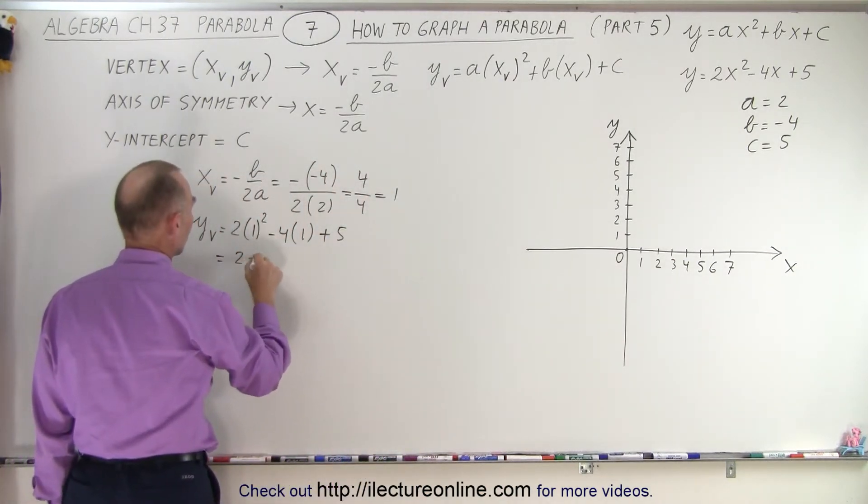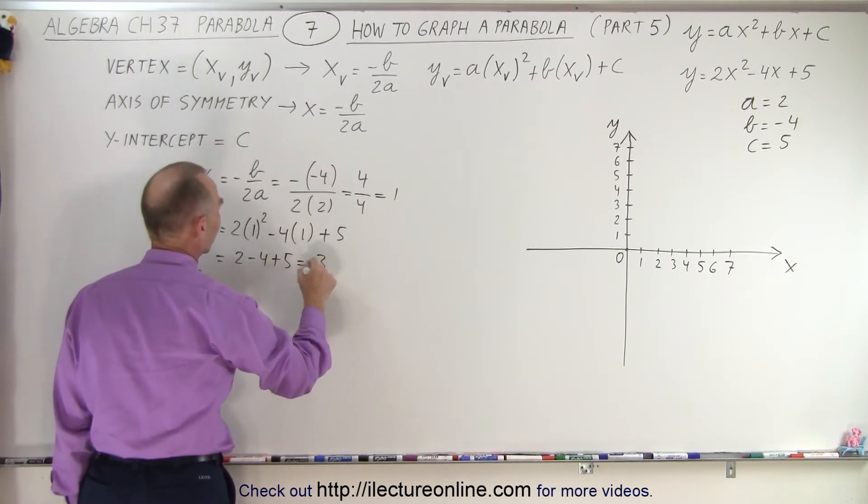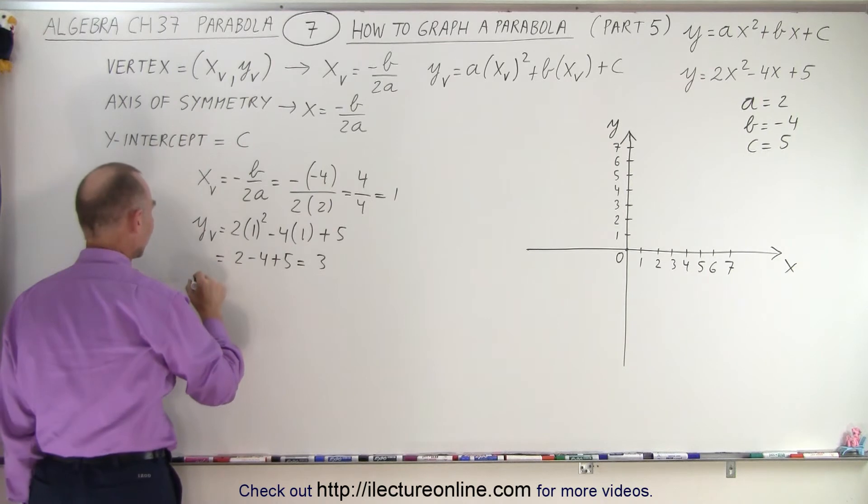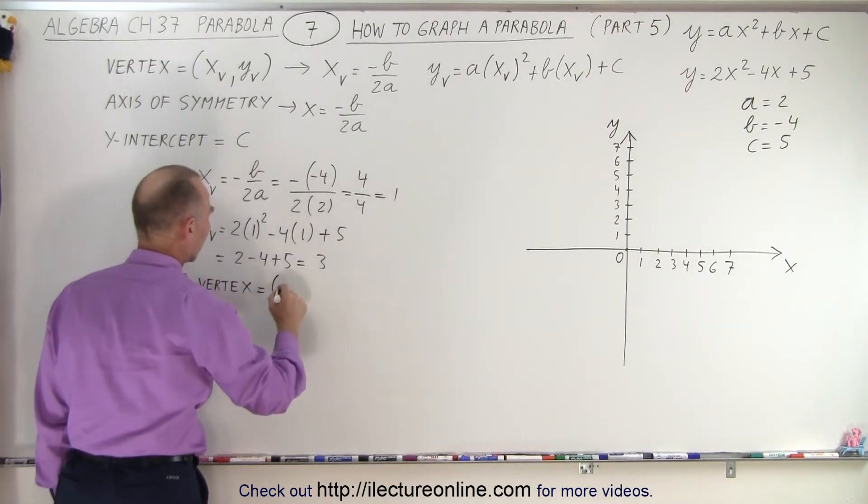that's 1 times 2, which is 2, minus 4, plus 5, that's 7 minus 4, which is equal to 3. Which means that the vertex is equal to the x-coordinate, which is equal to 1, and the y-coordinate, which is equal to 3.